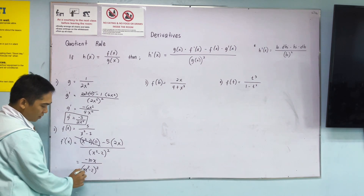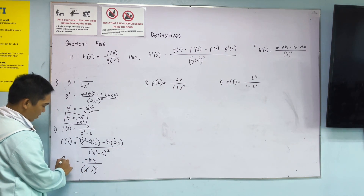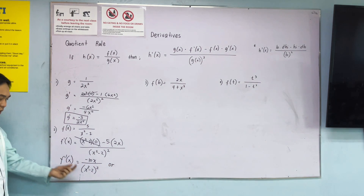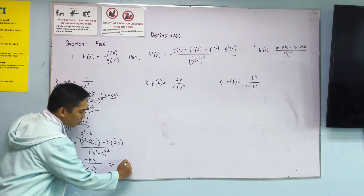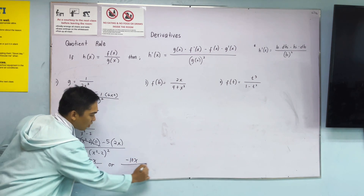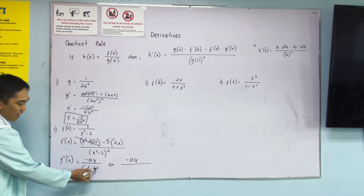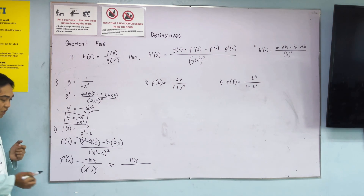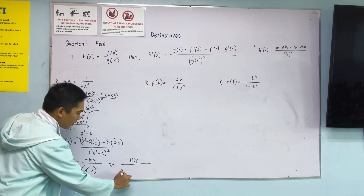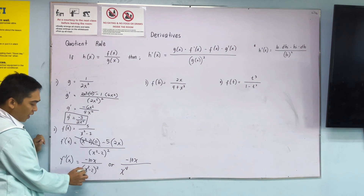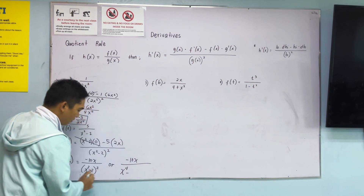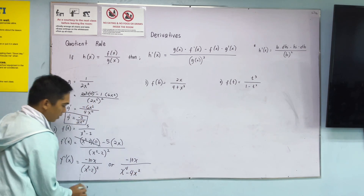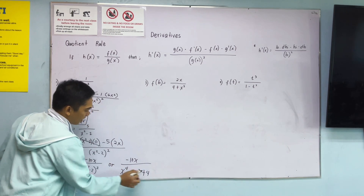Or if we want to expand, we can. So this is now the final answer. Or, if the instruction says without parentheses, the final answer is negative 10x all over — apply the rules of special products. Square the first term: x raised to 4. Multiply the first and second terms: negative 2x squared times 2 is negative 4x squared. Then square the last term: plus 4.